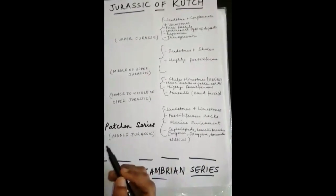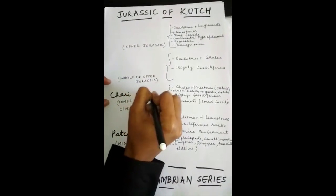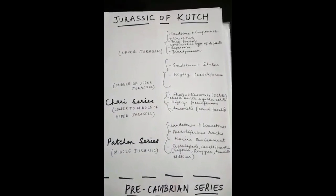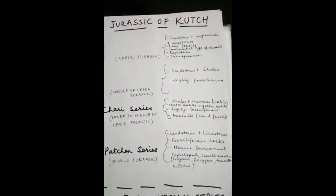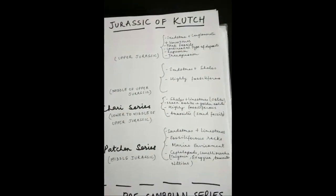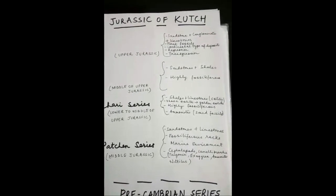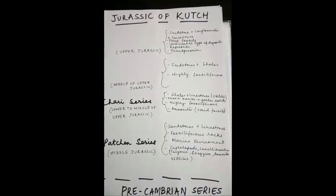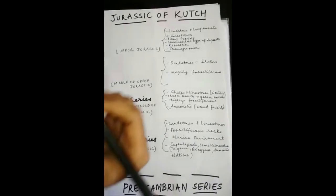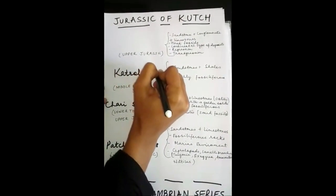Then was the Chari series, which was formed in the lower to middle of upper Jurassic. They are mainly shales and oolitic limestones. These oolites are also called Dhosa oolites, which turn into golden or yellow oolites because of oxidation. They are highly fossiliferous and mainly consist of ammonites as zonal fossils.